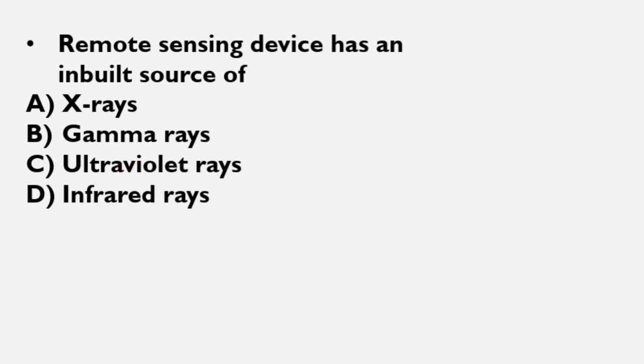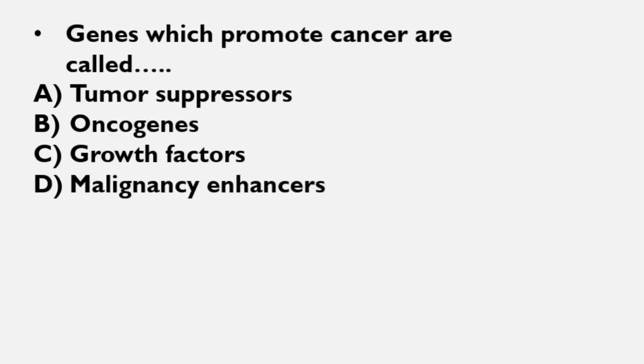Now next question: Genes which promote cancers are called... A) Tumor suppressors, B) Oncogenes, C) Growth factors, D) Malignancy enhancers. Its correct answer is option B, oncogenes.